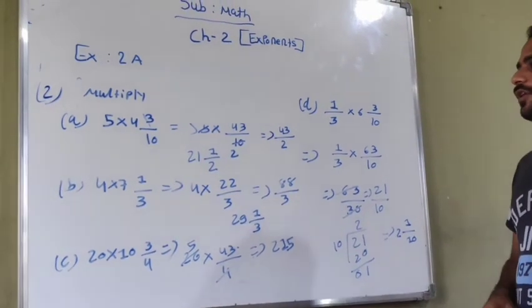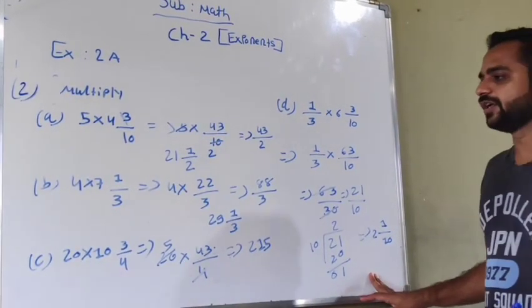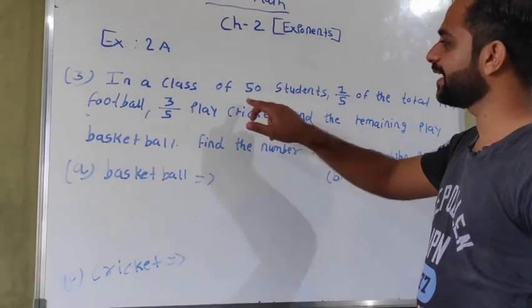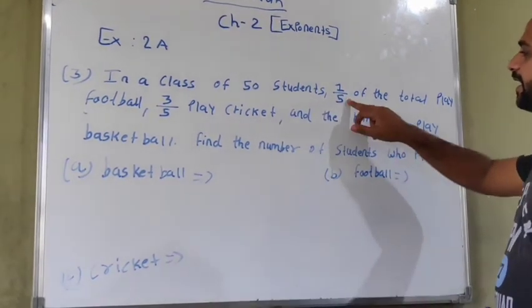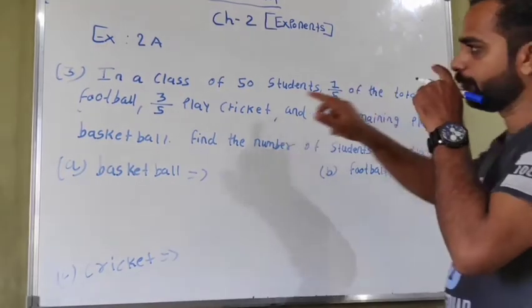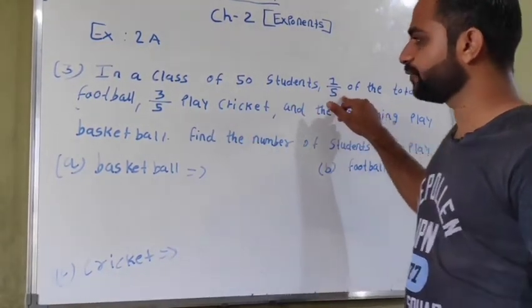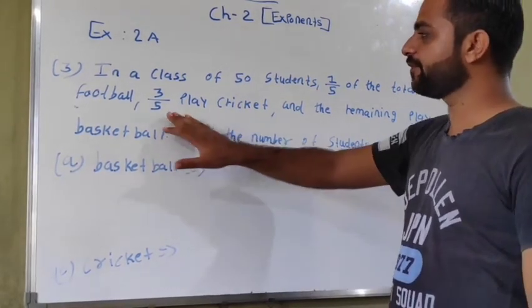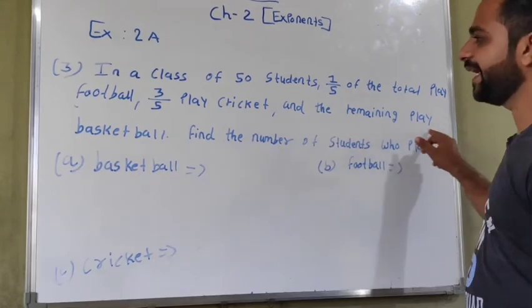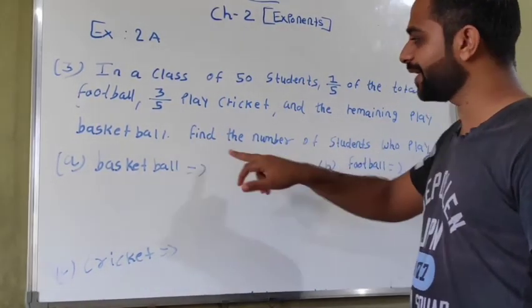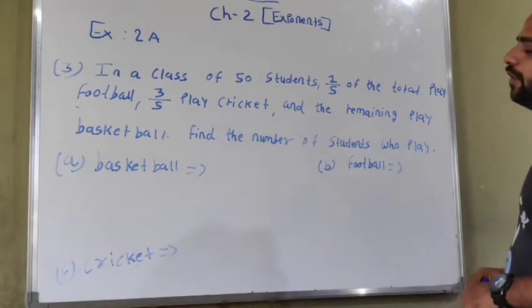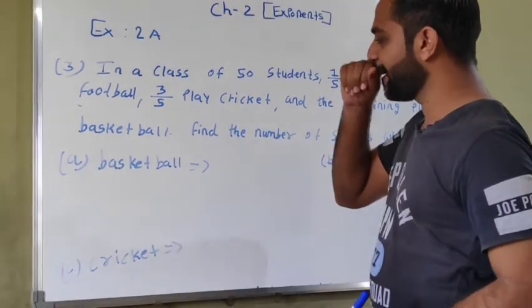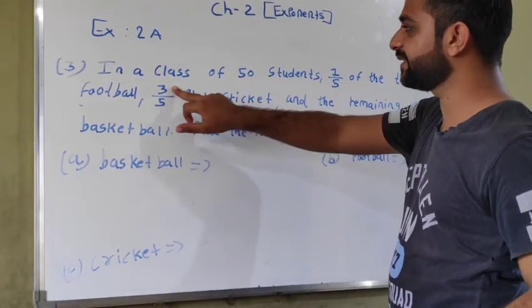So our third point is, in a class of 50 students, 1 upon 5 of the total play football, 3 upon 5 students play cricket, and the remaining play basketball. Find the number of students who play each game. We need to do cross multiplication.